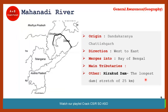The next important river is Mahanadi. Its origin is Dandakaranya in Chhattisgarh. It flows from west to east and merges into the Bay of Bengal. Very importantly, the Hirakud dam — the longest dam in India, stretching about 25 km — is situated on the Mahanadi river. Note the distinction: the highest dam is Bhakra Nangal, while the longest dam is Hirakud.